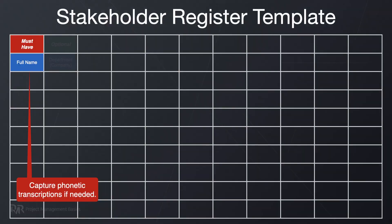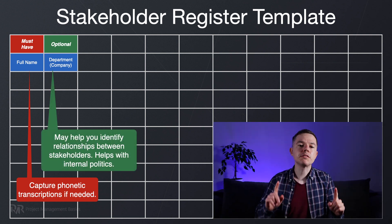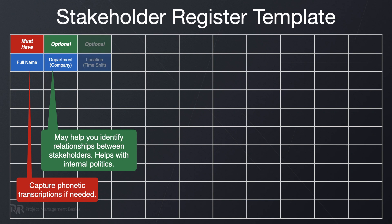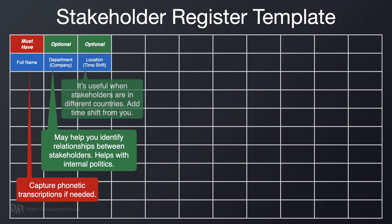Next to the person's name, put the name of the department where the stakeholder works. It's one of the critical inputs to analyzing relationships between stakeholders. Then you can state the location — it's necessary only if your stakeholders are located in different countries and knowing their time zone is important. It may also give you insights into cultural values and subtle national differences in work ethics.